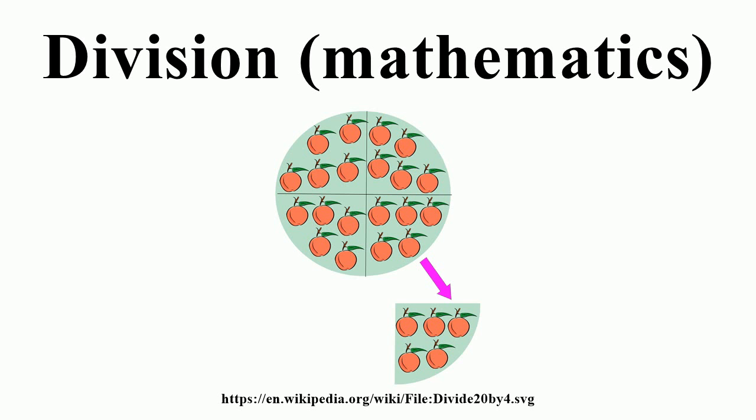Division for complex numbers expressed in polar form is simpler than the definition above. Again all four quantities p, q, r, s are real numbers, and r may not be zero.